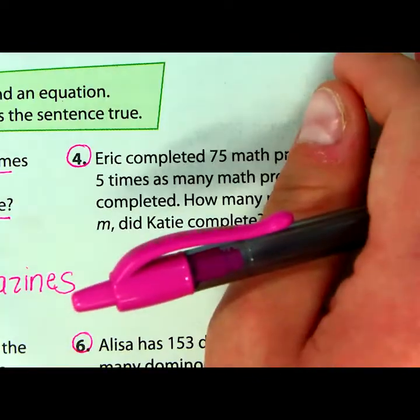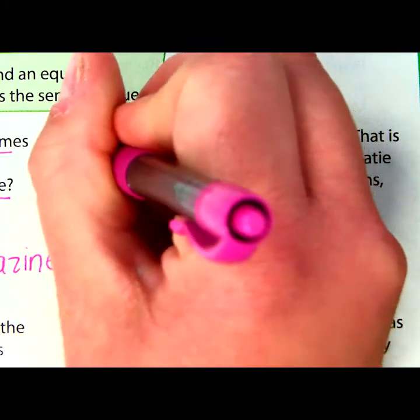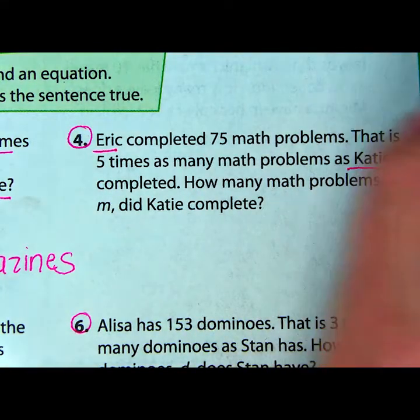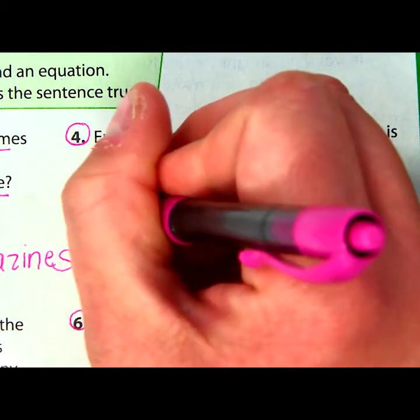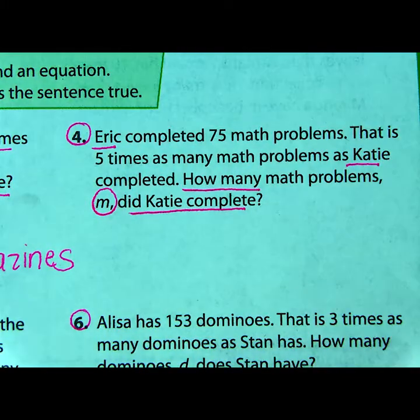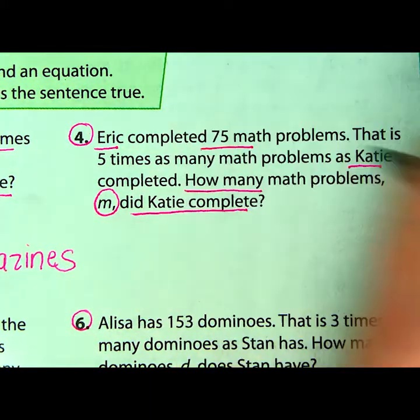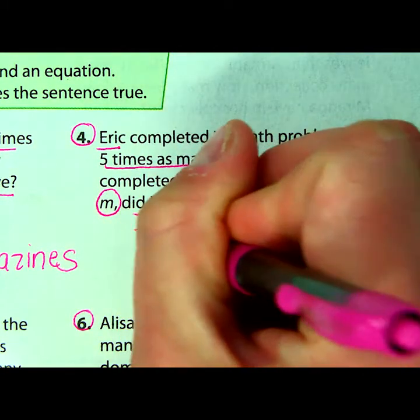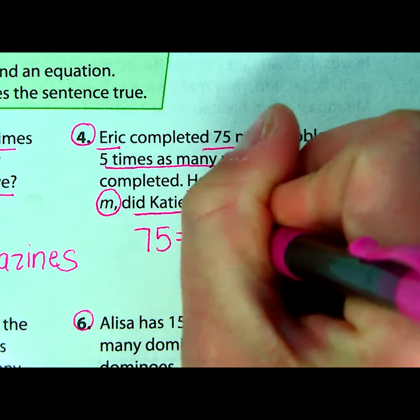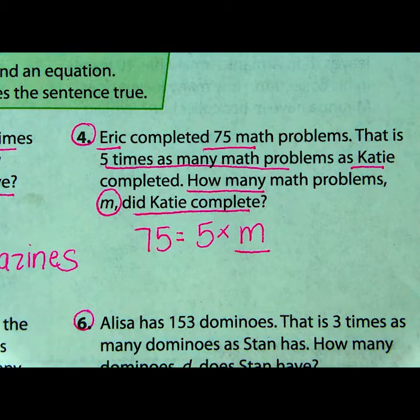Let's look at example number four. Eric completed 75 math problems. That is five times as many math problems as Katie. So we're comparing the work that Eric did to the work that Katie did. The question is: how many math problems, m, did Katie complete? We're using this variable and we're solving for Katie. She is the unknown in this problem. Eric completed 75, and that was five times as many as Katie, so 75 is equal to five times m.